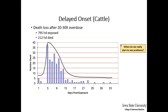A case at Iowa State University involved feedlot calves exposed to monensin at 20 to 30 times the therapeutic dose. There were 795 animals exposed and 212 ended up dying. The graph shows that a few animals died in the first couple of days, but the majority died between days 5 and 13 after acute exposure, at which point the classical heart lesions were present — these lesions may be absent in animals that died in the first couple of days.